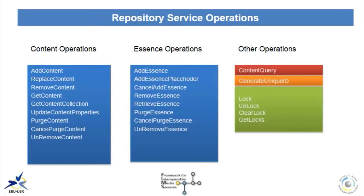Now let's talk about the service operations. For the repository interface, here is the list of operations to consider, classified into several categories. The content operations: add content, get content, purge content. The essence operations: add essence, remove essence, retrieve essence, purge essence. And other operations, in particular the generate unique ID operation and all the locking operations. Note that support for locking is not mandatory — it is actually a good example of operations that do not make sense in all repository implementations.